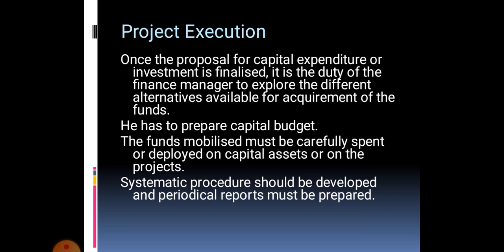Some firms directly purchase capital assets, while others in the initial stage need equipment. Finally, the amount is invested — one source for raising funds and one source for investment. They follow a systematic procedure and prepare periodical reports. First, project generation takes place, then screening, then selection, and finally execution. This is how capital budgeting will be successful.